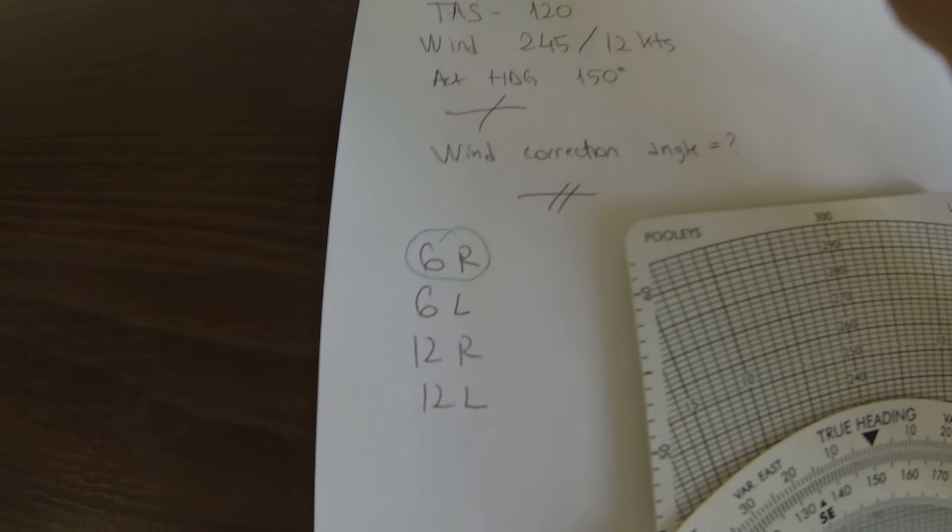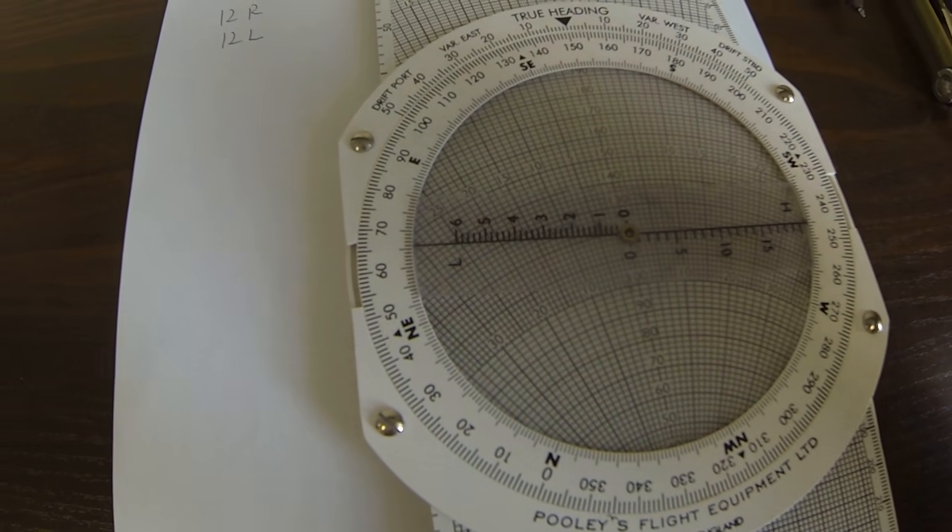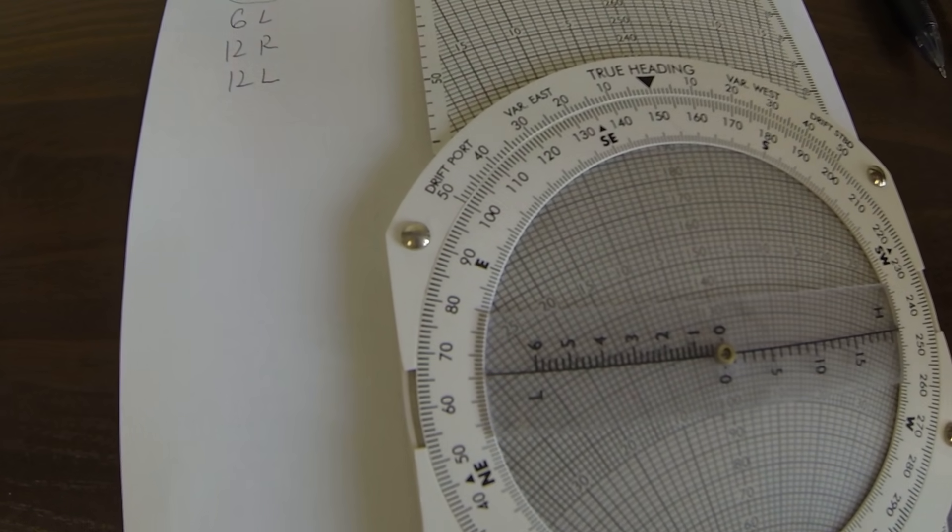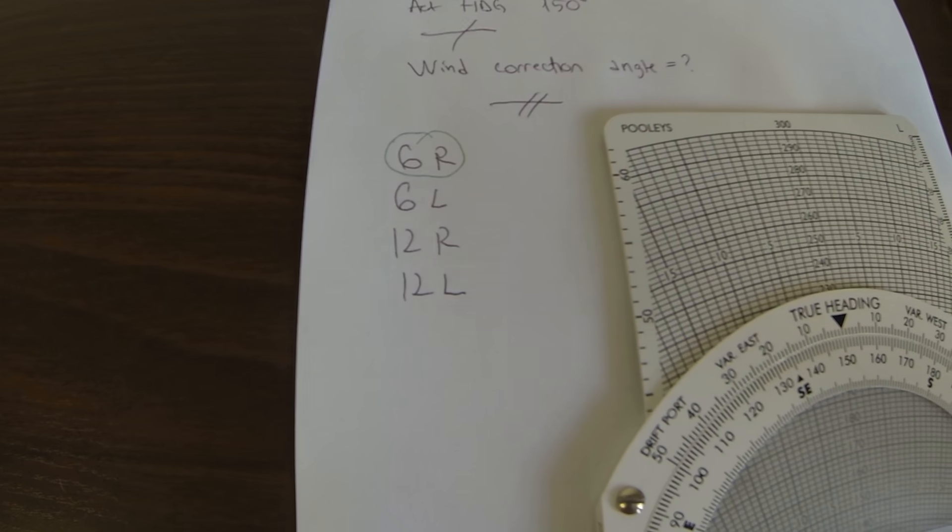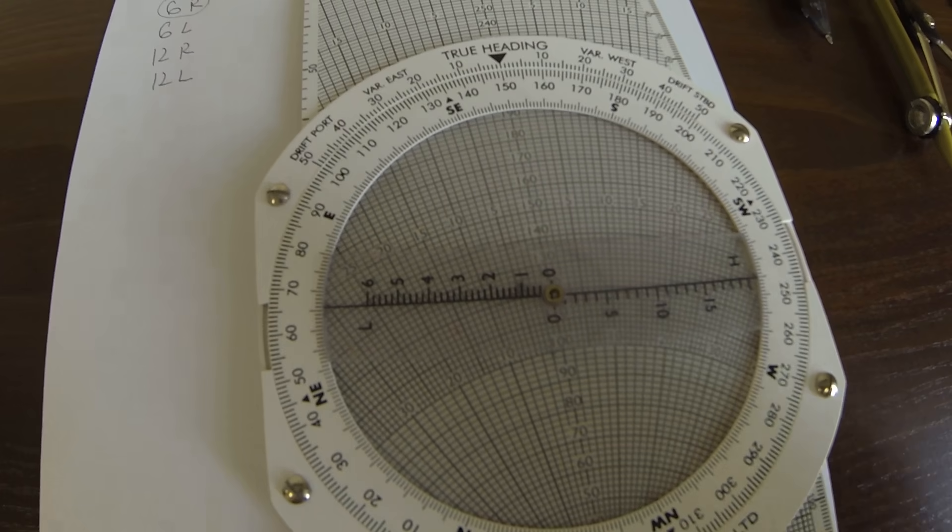Because we are drifting like this but the correction is to the right, so it's 6 right, the wind correction angle. It's a very common mistake, very simple one, but if you make this mistake you get to a totally different result. So final answer 6 right wind correction angle.